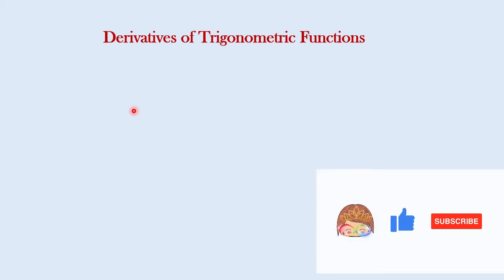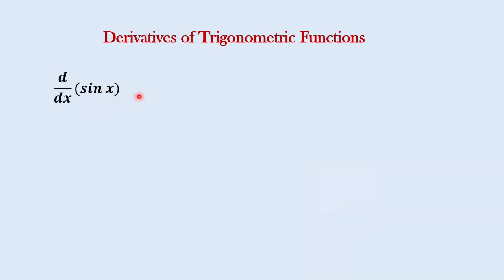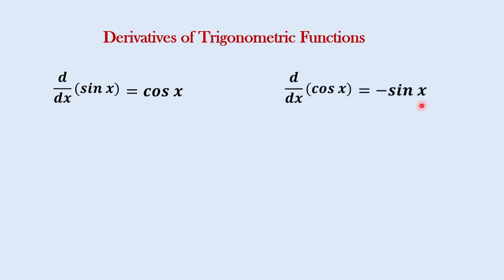Let us go over the derivatives of the six trigonometric functions. The derivative of sine x is equal to cosine x. The derivative of cosine x is negative sine x. The derivative of tangent x is secant squared x.